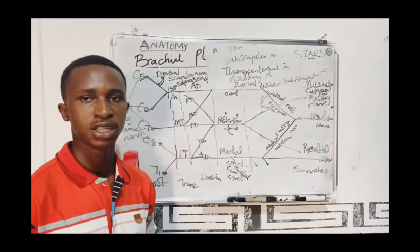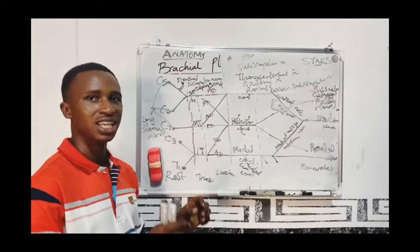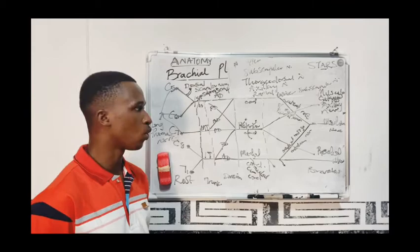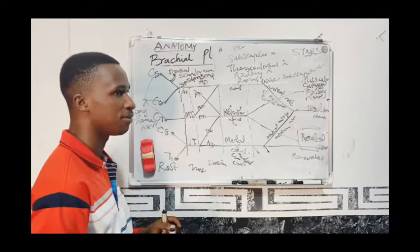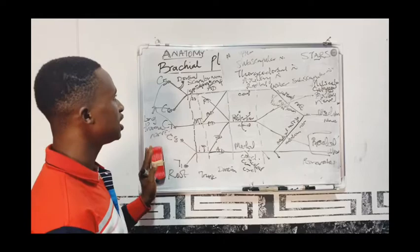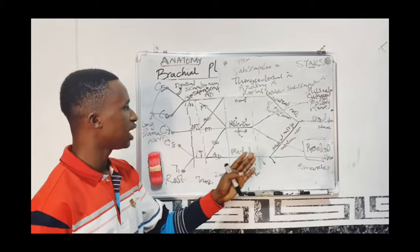One important point to remember: of all the nerves mentioned, the largest nerve found in the brachial plexus is the median nerve, and the smallest nerve in the brachial plexus is the medial cutaneous nerve of the arm.